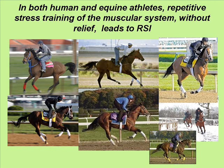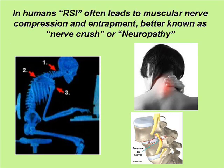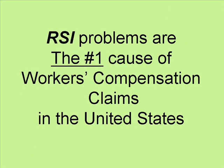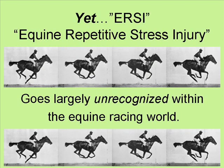In both human and equine athletes, repetitive stress training of the muscular system without relief leads to RSI. In humans, RSI often leads to muscular nerve compression and entrapment, better known as nerve crush or neuropathy. RSI problems are the number one cause of workman's compensation claims in the United States. Yet, ERSI — equine repetitive stress injury — goes largely unrecognized within the equine racing world.